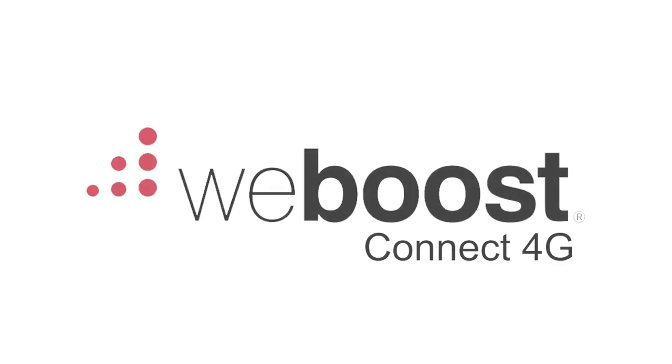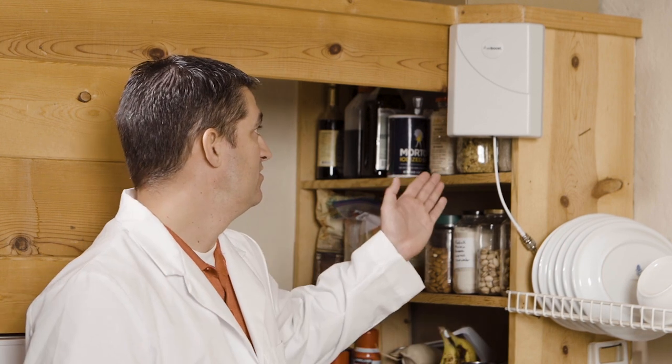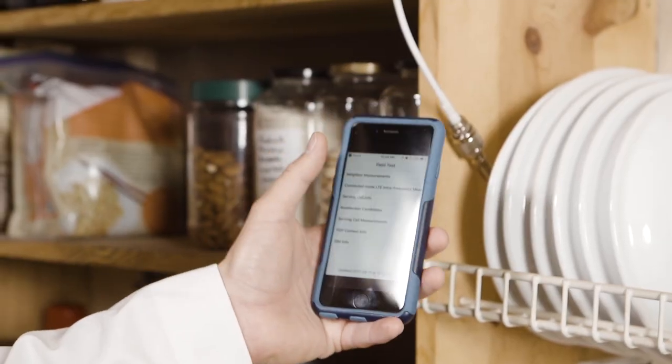And now here we are. We're going to compare the WeBoost Connect 4G to see how it stacks up. We've installed it according to the manufacturer's specs. We installed the antenna outside and ran the wire inside, just like we're supposed to. We have the WeBoost panel antenna here on the wall. Just turning this on.